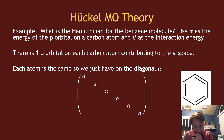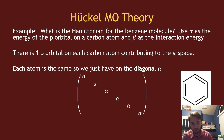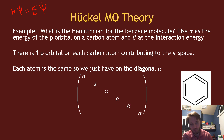If we're looking at benzene, we need to write out the Hamiltonian matrix for benzene. The Schrödinger equation H psi equals E psi, using Huckel MO theory and the variational principle, becomes a set of matrix equations.